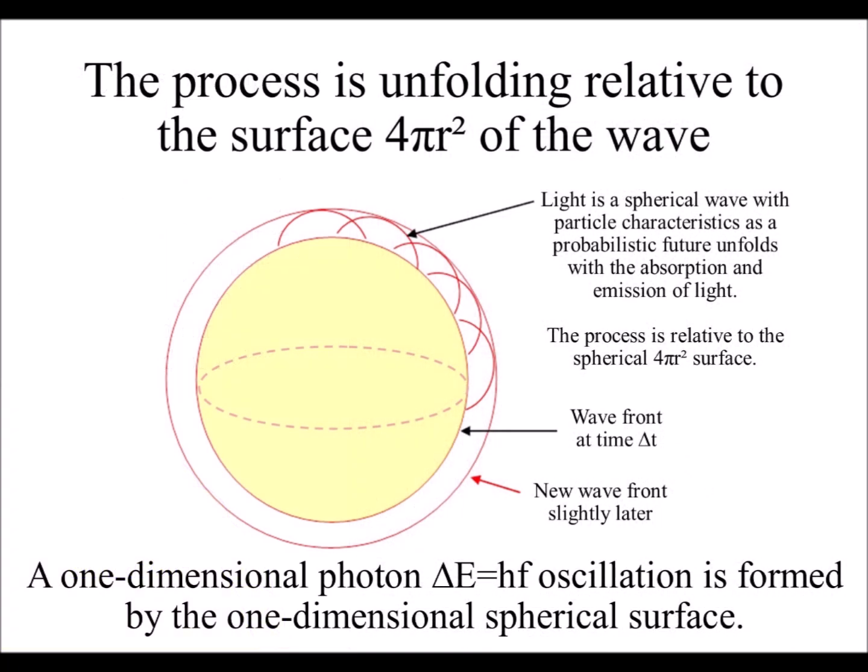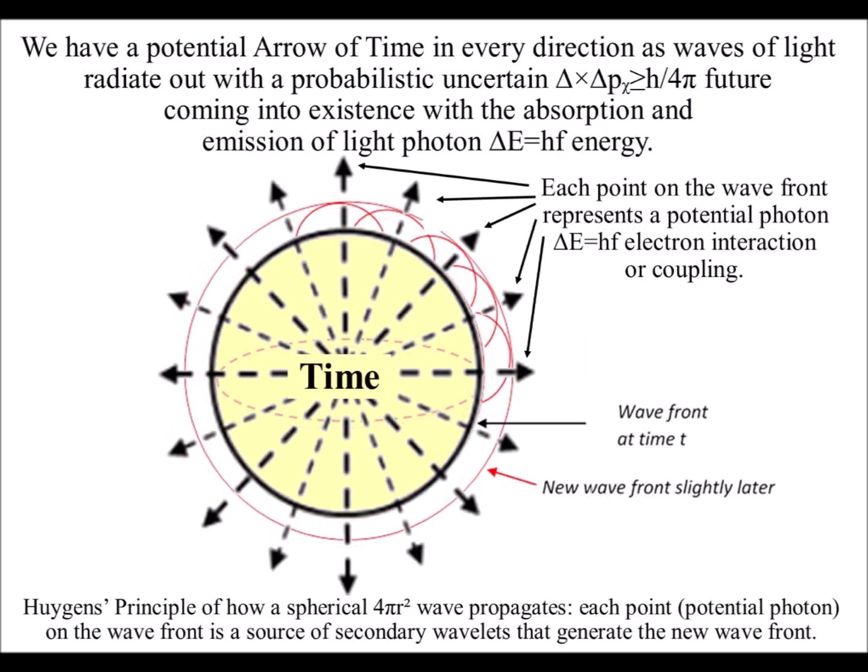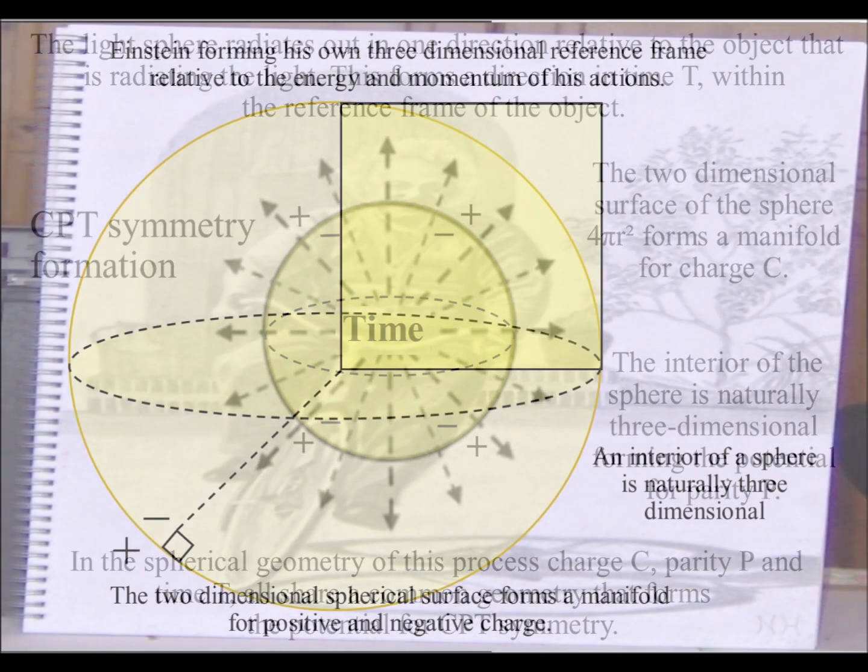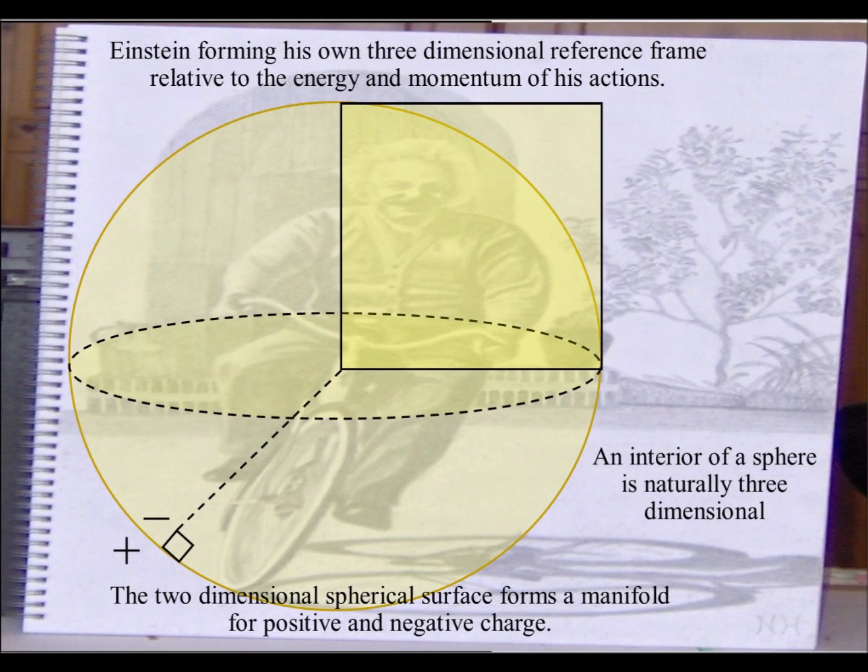Each point on the wavefront can represent a potential photon-electron interaction or coupling. The interior of the sphere naturally forms the characteristics of three-dimensional space, with the spherical surface forming a probabilistic wavefront. The circular surface forms a boundary condition or manifold for positive and negative charge, with the uncertainty of everyday life unfolding upon this two-dimensional manifold.